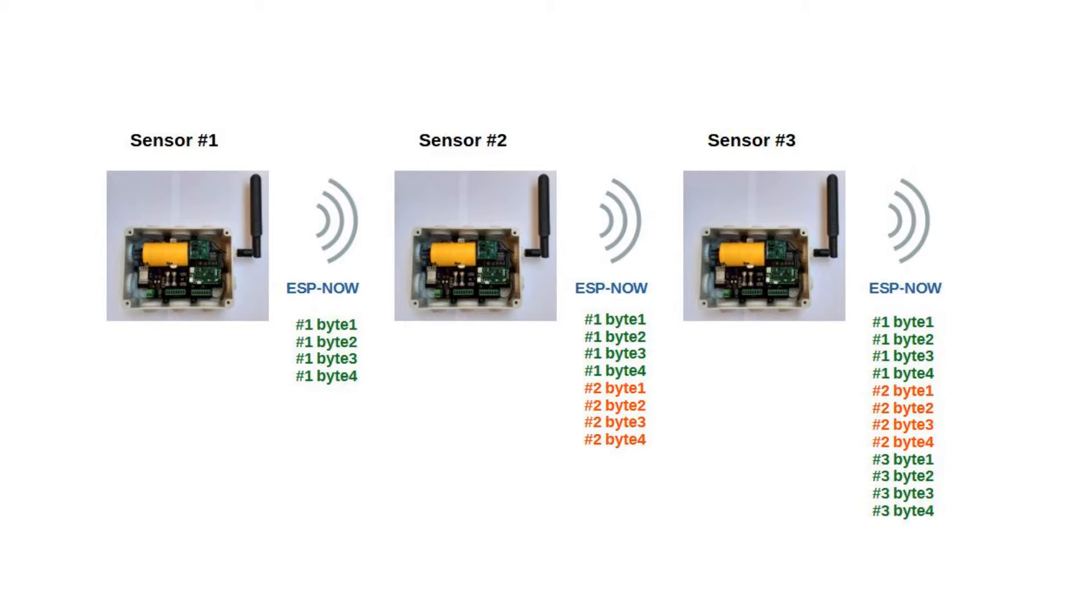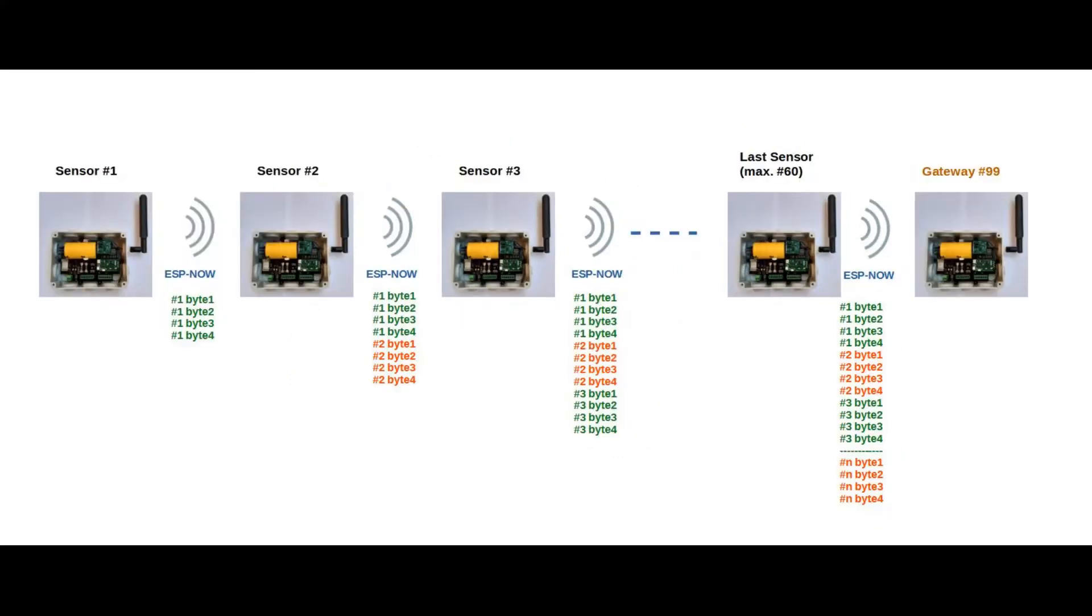The network can include from a minimum of 1 to a maximum of 60 sensors. This maximum limit is to stay within the transmission limit of the ESPNOW protocol, which is 250 bytes.